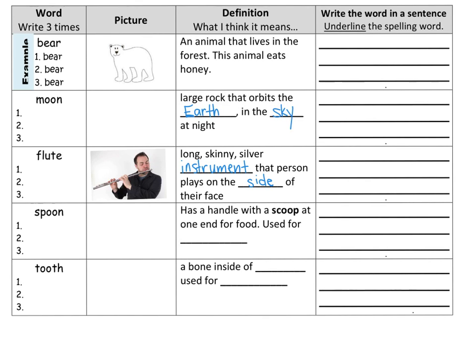The next word is spoon. A spoon has a handle with a scoop. A scoop means that it looks like a curved shape and you can put things into it. So it has a handle and a scoop at one end for food.